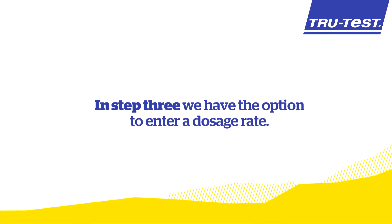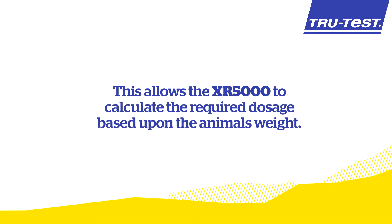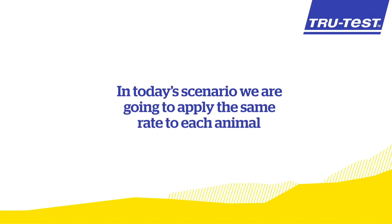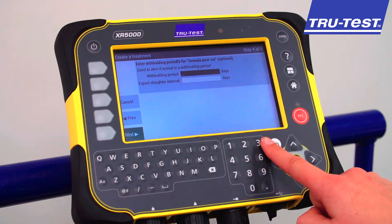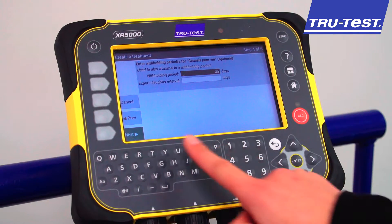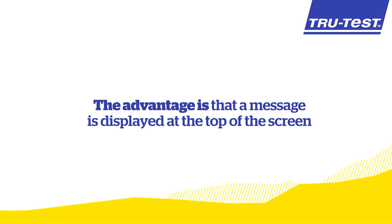In Step 3 we have the option to enter a Dosage Rate. This allows the XR5000 to calculate the required dosage based upon the animal's weight. In today's scenario we are going to apply the same rate to each animal, so we will leave this blank. In Step 4 we have the option to enter a withholding period. The advantage is that a message is displayed at the top of the screen each time an animal is recorded while in withholding.